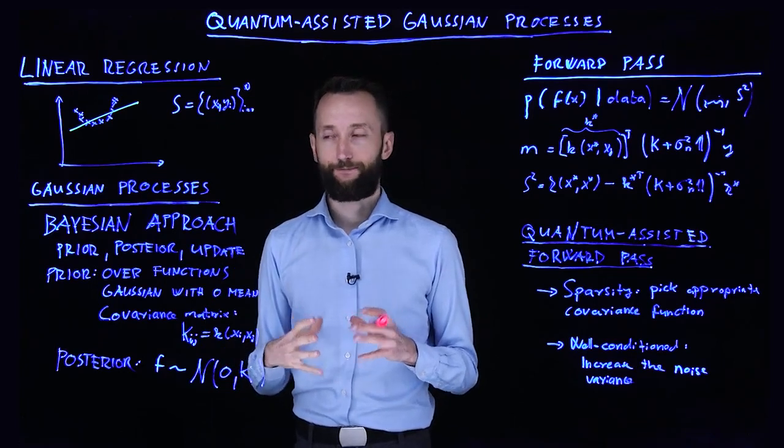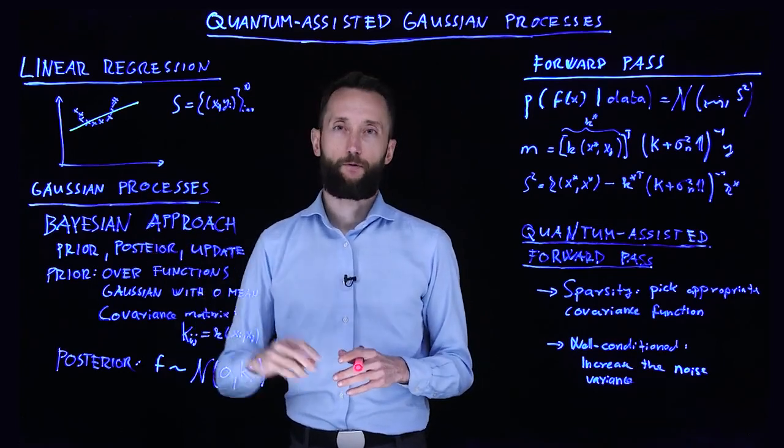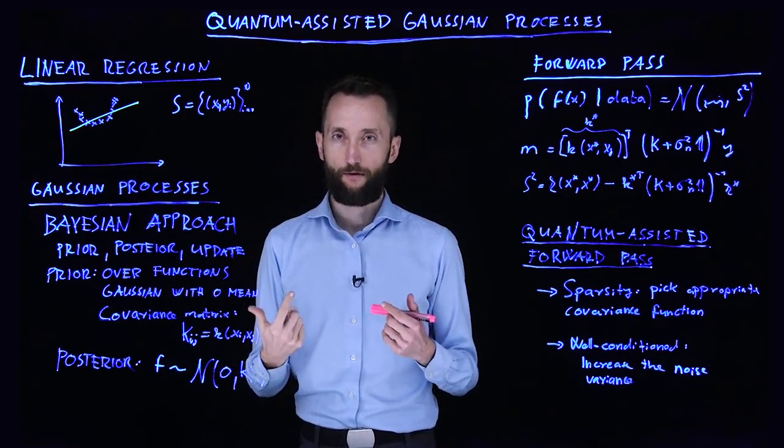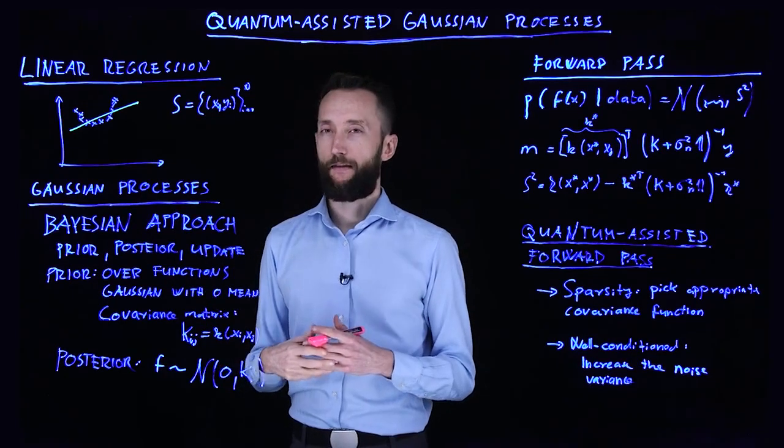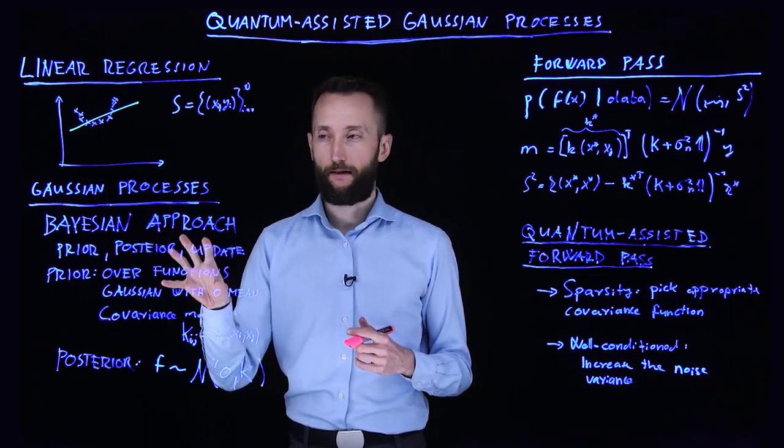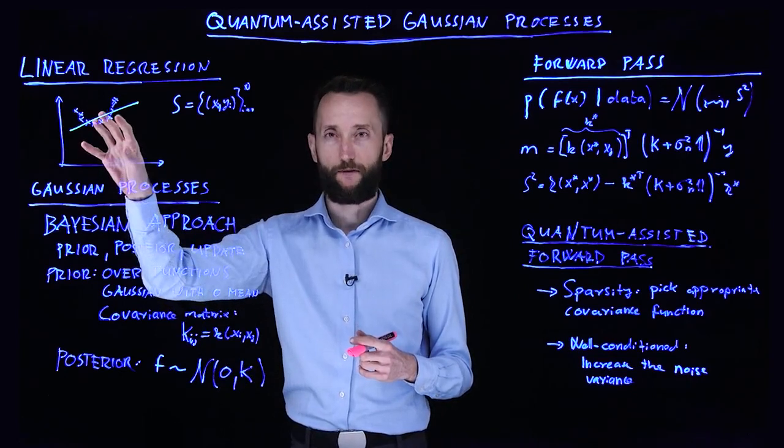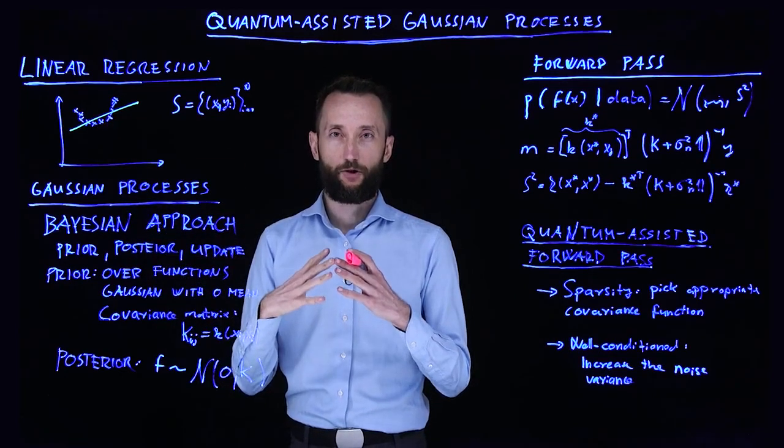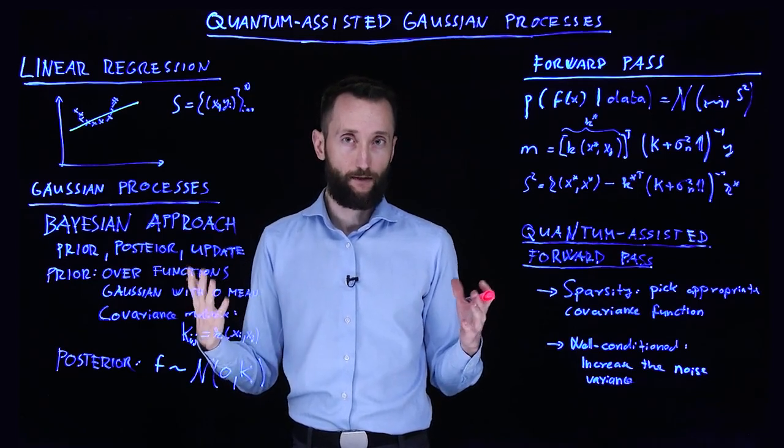So Gaussian processes are different. They take a Bayesian approach, which means you always get some estimate of the confidence of a prediction. And in this particular case, what these models achieve is that instead of fitting a specific function to the data points, you get a probability distribution over all possible functions in principle.